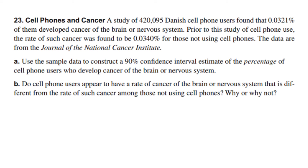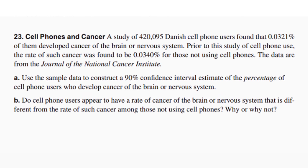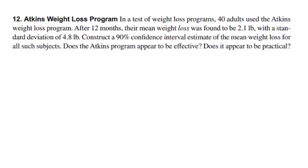There is a second problem dealing with the Atkins weight loss program. In a test of weight loss programs, 40 adults used the Atkins weight loss program. After 12 months, their mean weight loss was found to be 2.1 pounds with a standard deviation of 4 pounds. Construct a 90 percent confidence interval estimate of the mean weight loss for all such subjects. Then answer two questions: does the Atkins program appear to be effective, and does it appear to be practical?